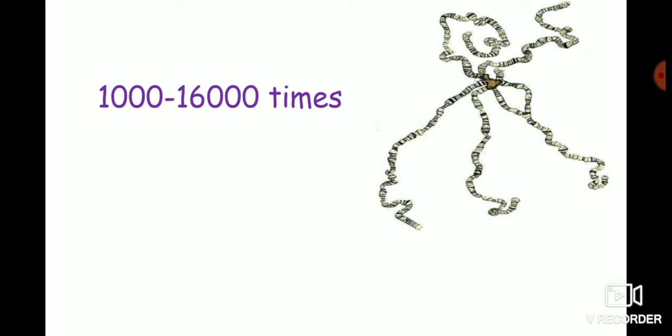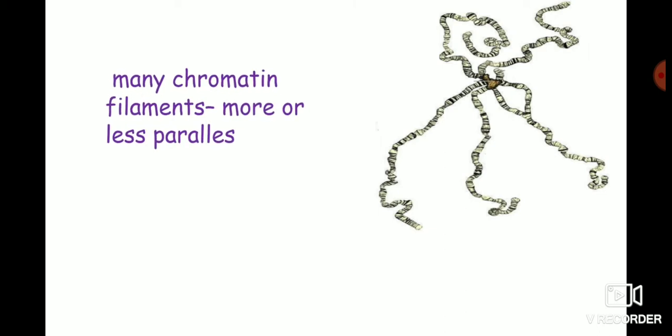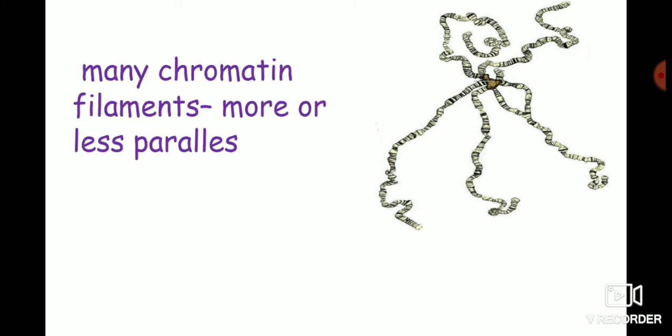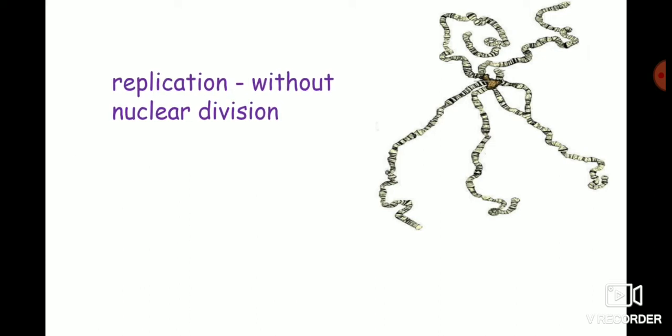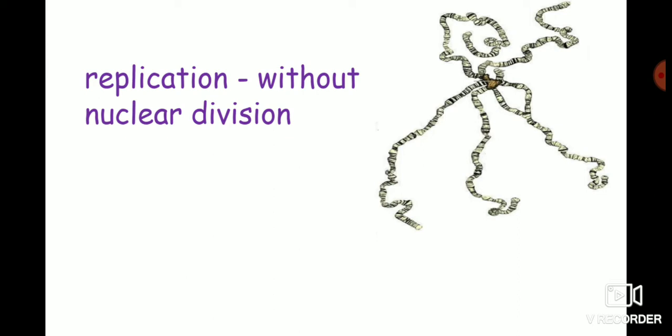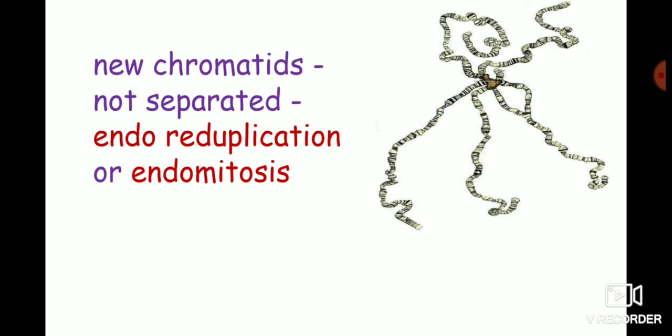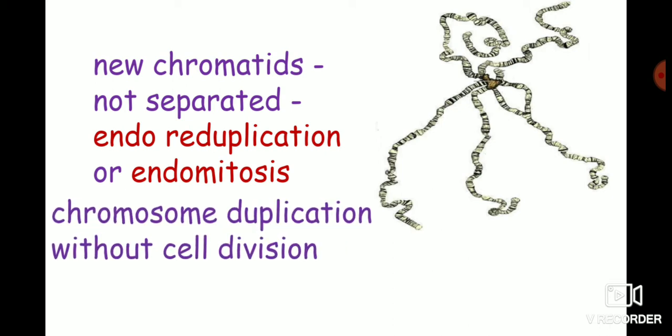This chromosome contains 1000 to 16,000 times more DNA than normal cells. A common structural feature of all polytene chromosomes is that their chromatin filaments or chromatids lie more or less parallel to each other or side by side. The reason for the higher number of chromatids is due to replication of DNA several times without nuclear division.